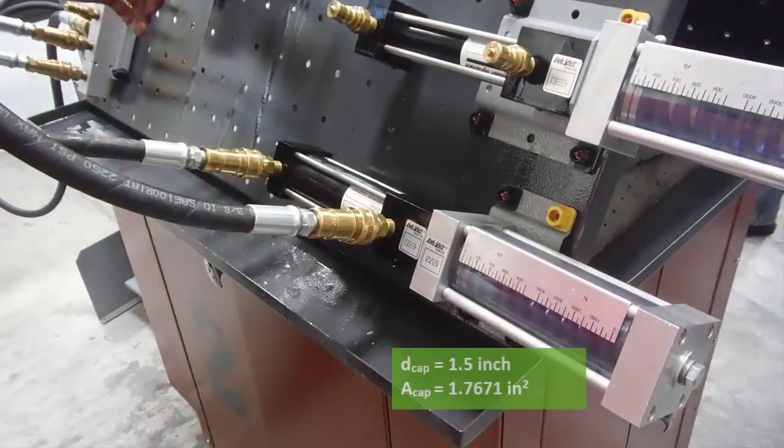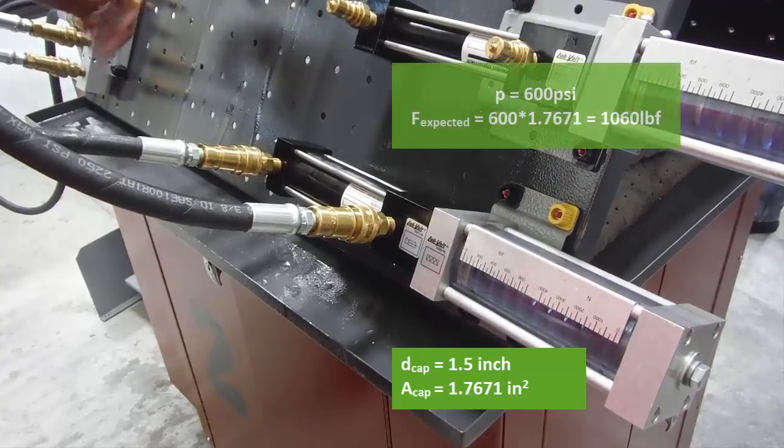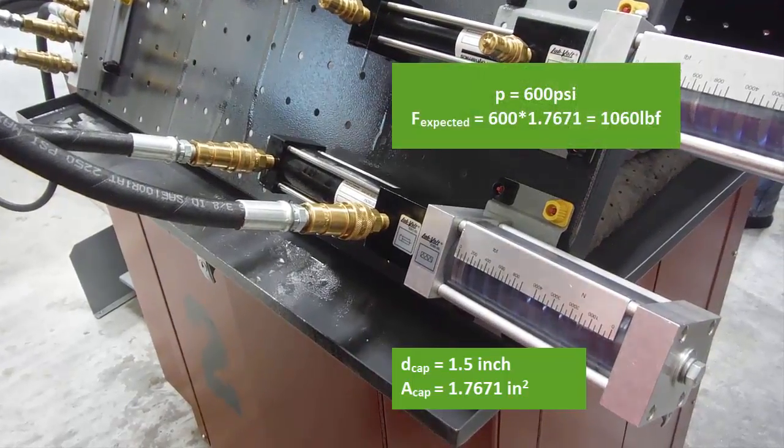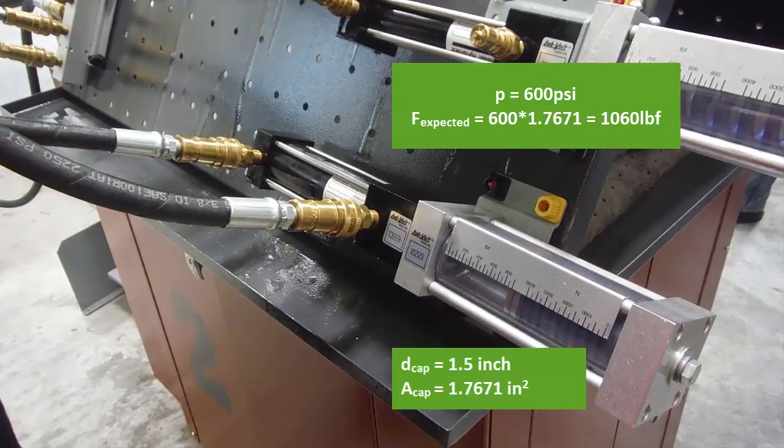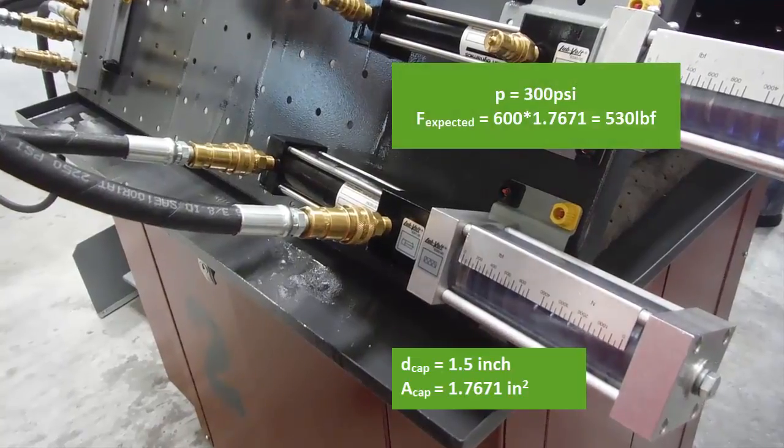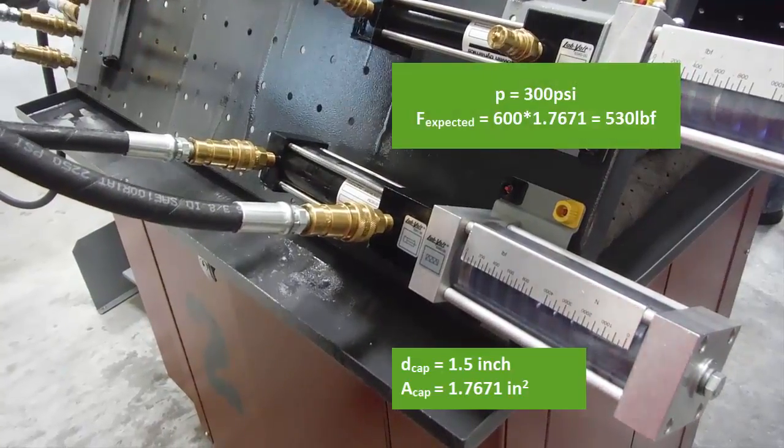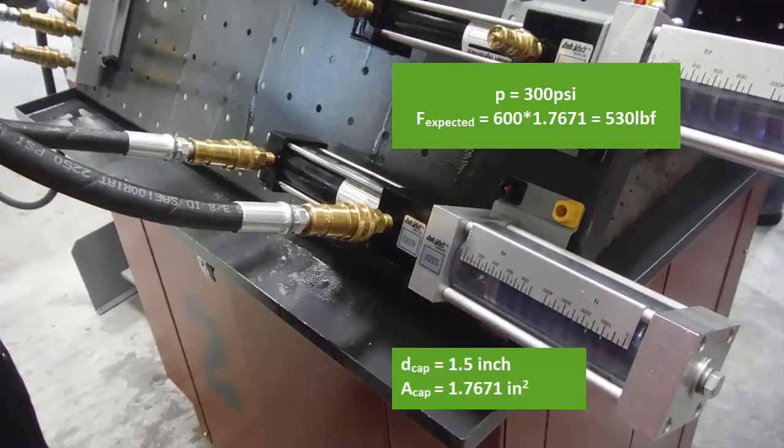Now we're going to be observing 600 psi applied to a 1.5 inch cylinder. We were expecting about 1,060 pounds of force. We got about 910, 920. We're going to crank that down to 300 psi. We were expecting about 530 pounds of force, and we got about 420.